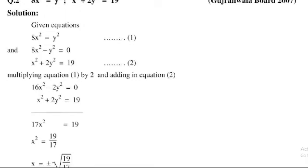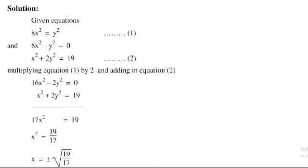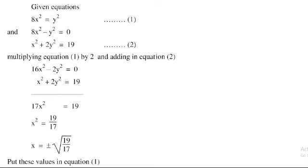Dividing both sides by 17: x² = 19/17. Taking the square root on both sides: x = ±√(19/17).